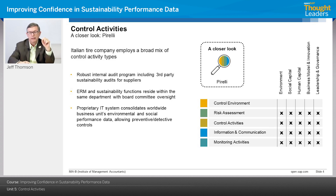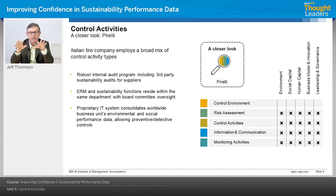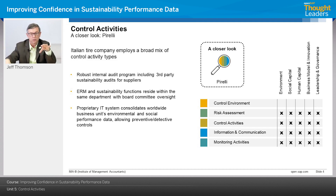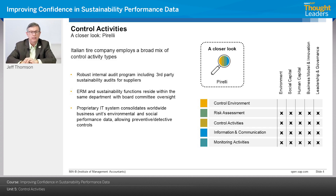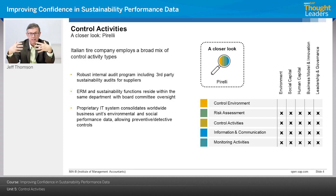If Pirelli is obtaining resources from third parties, that third party actually has impact on Pirelli's reputation. So it's important that assurance and attestation for sustainability information extends throughout the value chain, because they're one brand, one organization, one reputation — even if they outsource or offshore some activities. From a governance perspective, their ERM and sustainability functions reside within the same department with oversight from a board committee, creating collaboration, integration, and alignment that could lessen the risk of an internal controls breakdown.